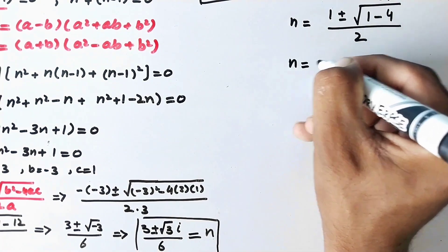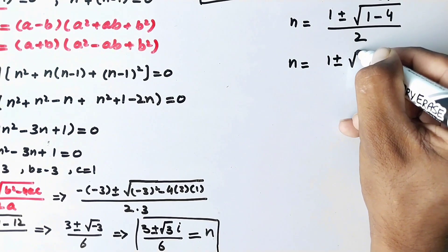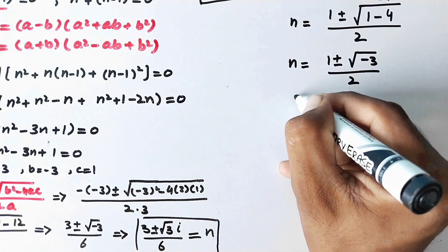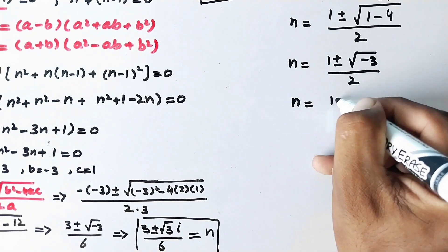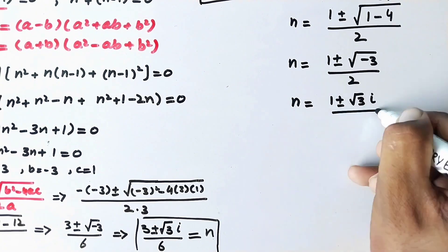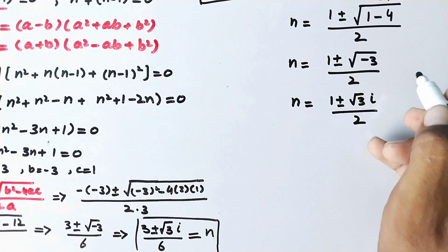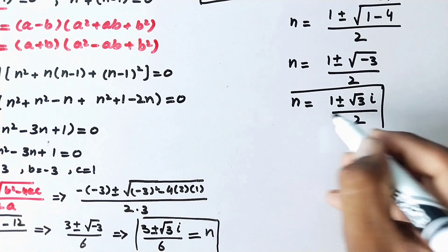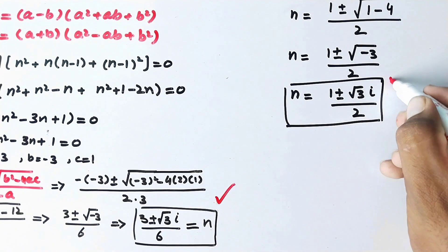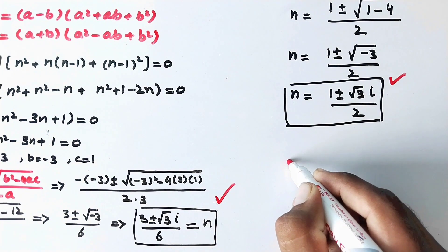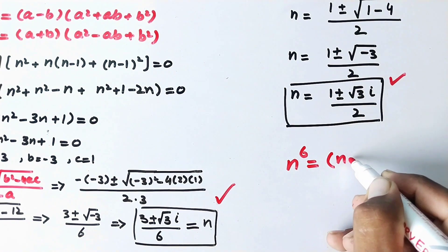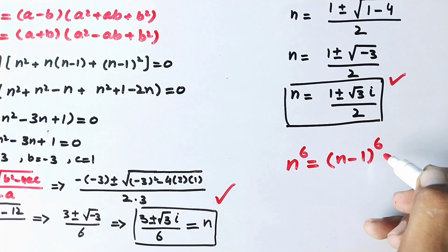This gives n equals 1 plus or minus square root of minus 3 over 2, which is n equals 1 plus or minus square root 3 iota over 2. So these are all the values of n for the equation n to the power 6 equals n minus 1 to the whole power 6.